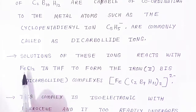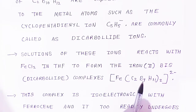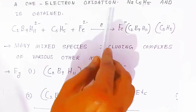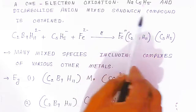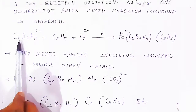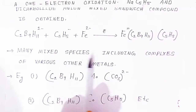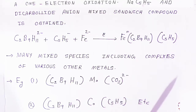The solution of dicarbollide ions reacts with FeCl2 in presence of THF to form the iron(2+) bis-dicarbollide complex. This complex is isoelectronic with ferrocene and readily undergoes one-electron oxidation. The sodium cyclopentadienyl and dicarbollide anions form a mixed sandwich compound — cyclopentadienyl on one side and carboborane on the other — forming a sandwich-like structure. Many mixed species including complexes of various other metals (molybdenum, cobalt) with carboboranes and cyclopentadienyl rings are also known. These are very important properties for examination purposes.